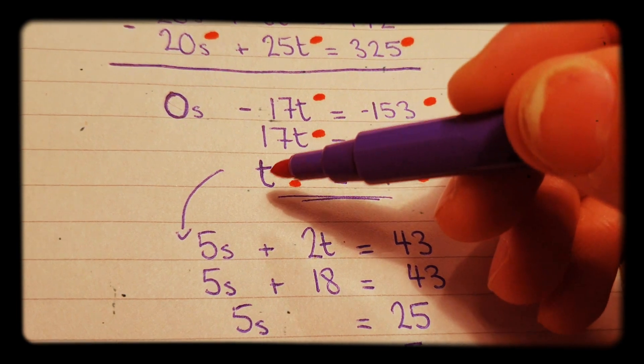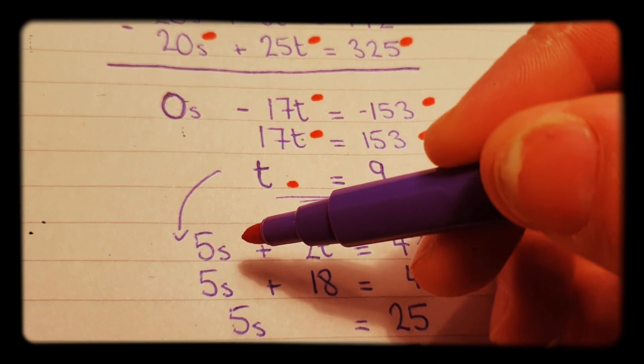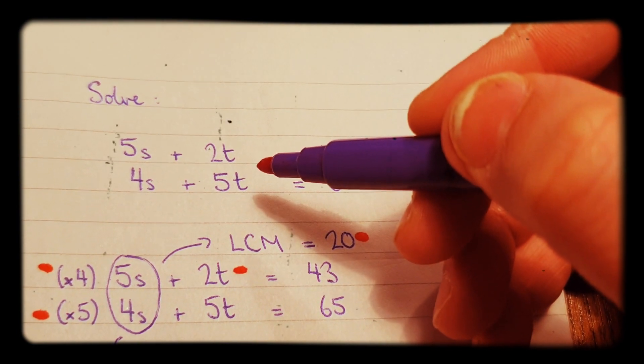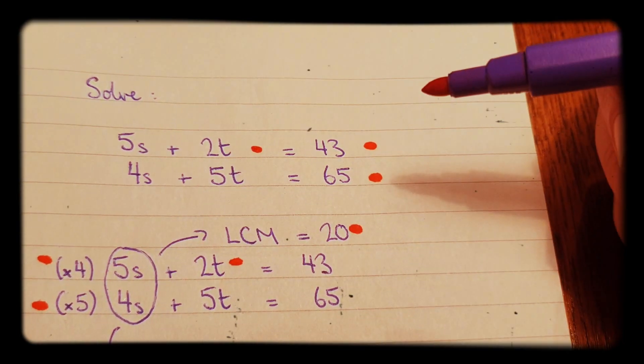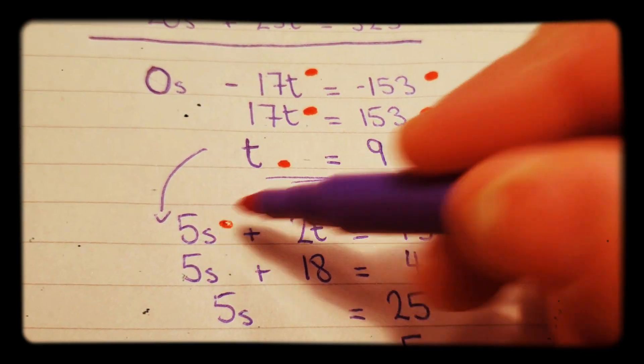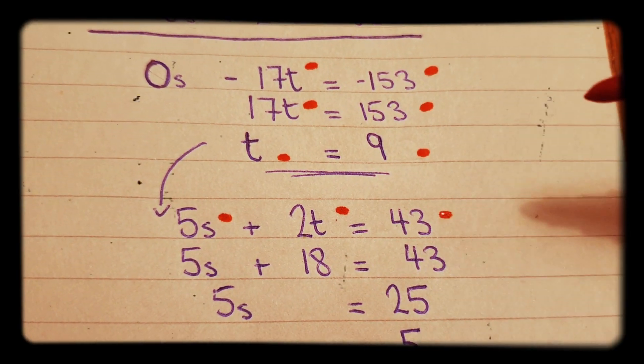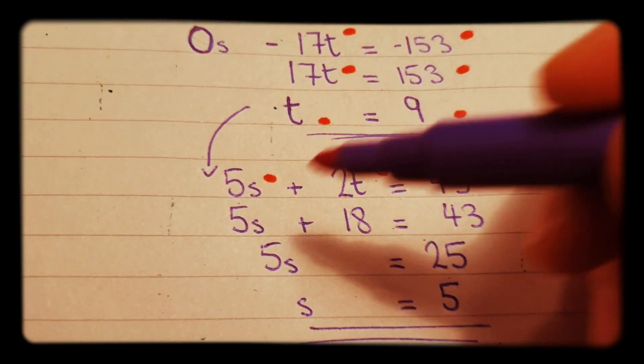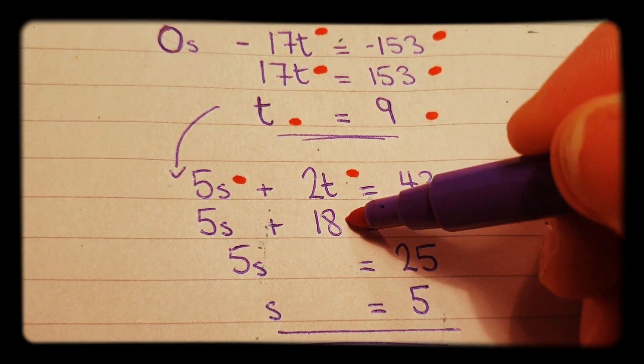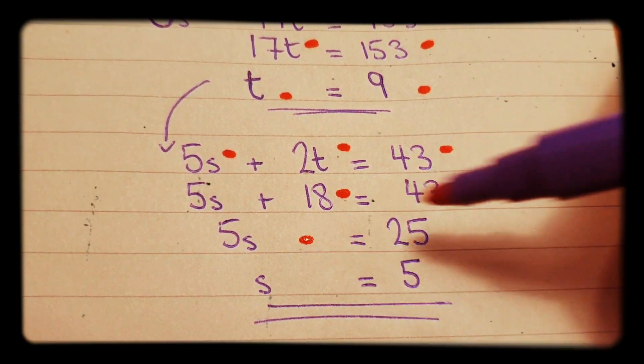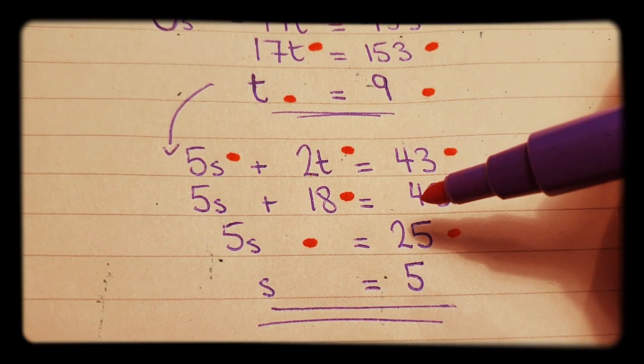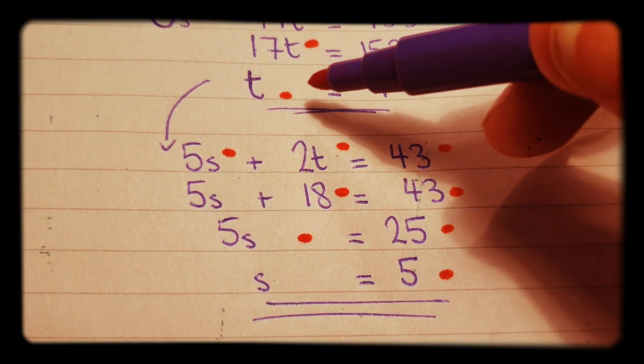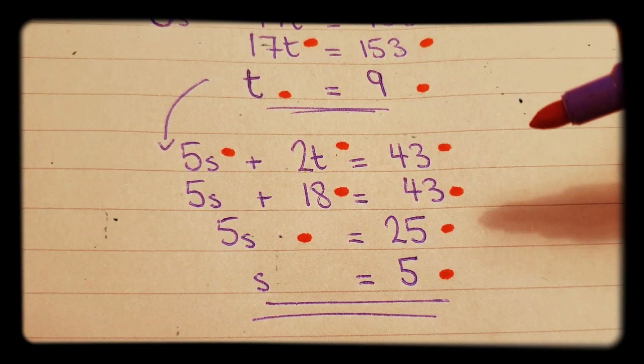Then after that, we'll put the t equals 9 back into one of the original equations, and I'm picking this one here. So I've put it back into that: 5s plus 2t equals 43. The t equals 9 we've put into there, so 5s plus 18 equals 43. 5s equals 25, and then s equals 5. And that's the answer: t equals 9 and s equals 5.